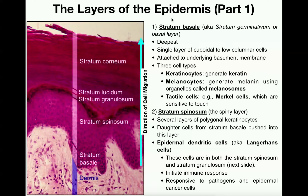It's stratified squamous, which means it's going to have squamous cells in many many layers, but it's keratinized — and that's very important — because the major cell type in the epidermis is going to be keratinocytes. There are other areas of the body that have non-keratinized stratified squamous epithelium, but not the skin. The skin is keratinized.